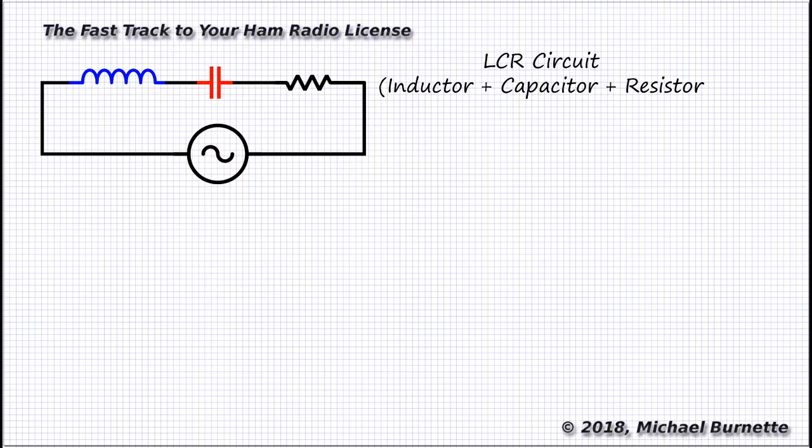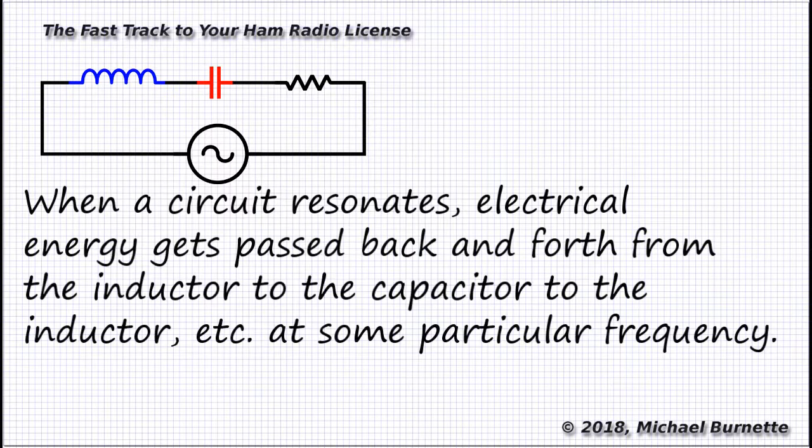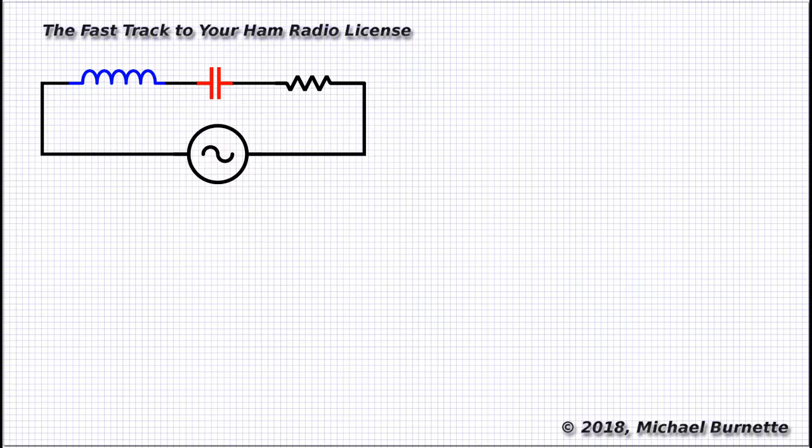Now, at some frequency, this circuit is going to resonate. This one's a series resonant circuit, so at that resonant frequency, the impedance of this circuit is going to be at a bare minimum. We want to know what that frequency is, given the values of the components in the circuit. Given the complexity of what's going on in a resonant circuit, the formula for calculating the resonant frequency of a series resonant circuit is really pretty simple.